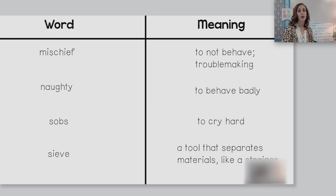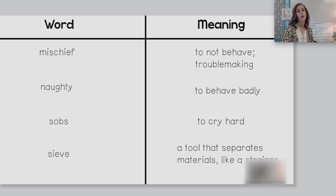Today our goal is to use The Tale of Peter Rabbit to learn how to describe a character by looking for clues from the author's words and phrases that describe how a character thinks or acts. We will begin with me showing you what that looks like, and then there will be time for you to practice on your own with my support. Finally, I will assign you independent work that you can complete after the video ends.